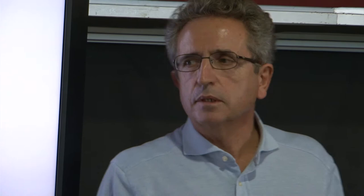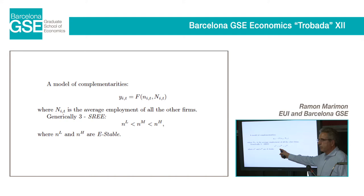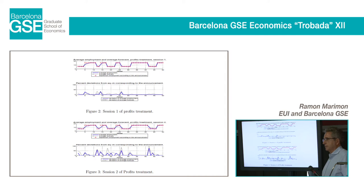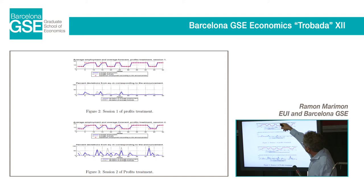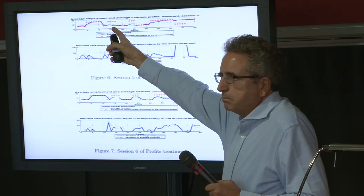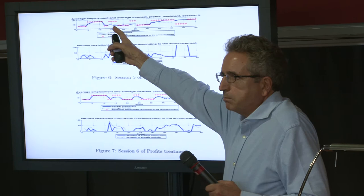A recent paper looks at a model where productivity depends on other firms' employment levels, creating multiple equilibria: high employment, low employment, and something in between. An announcement saying 'we think it's going to be high employment' is just words — nothing real — yet sometimes people do coordinate on it, though it takes a while. Other times, people realize it's more important what the others are actually doing rather than what this person is saying.